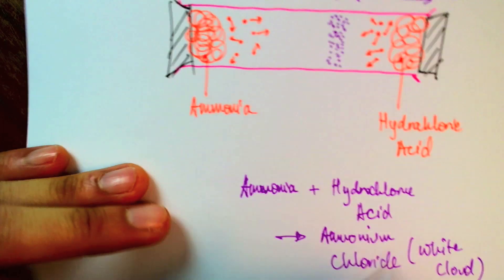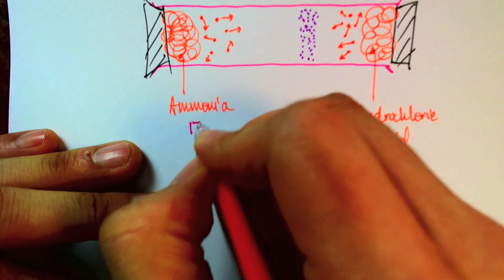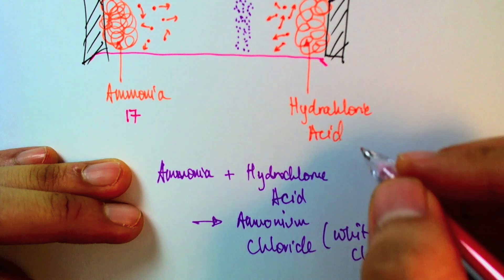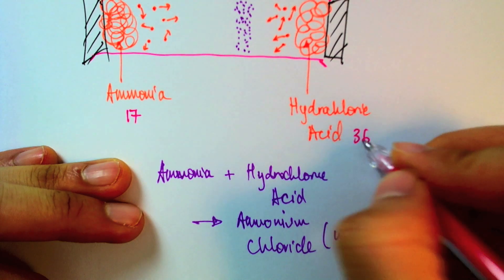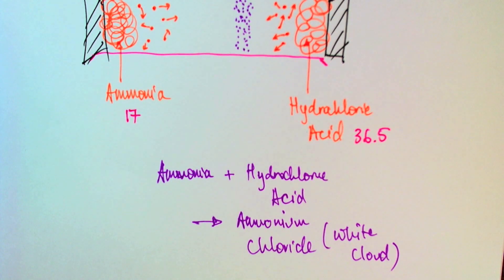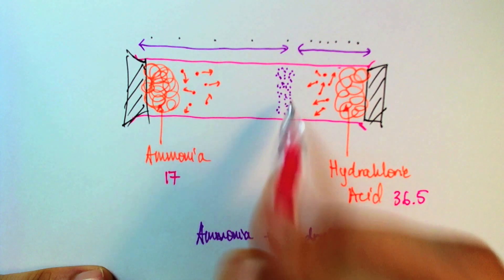In arbitrary units, the ammonia molecules happens to have a mass of 17, while the hydrochloric acid happens to have a mass of 36.5 or roundabout. So, you can see that they are almost twice as heavy. So, they would have covered half the distance that the ammonia molecules had covered, roughly speaking.